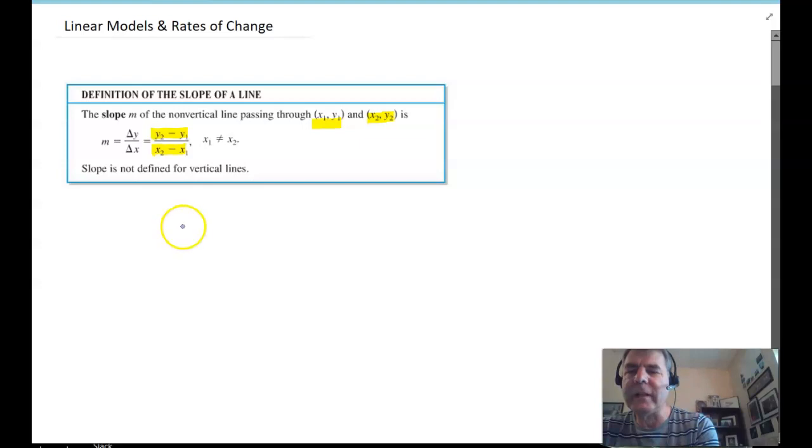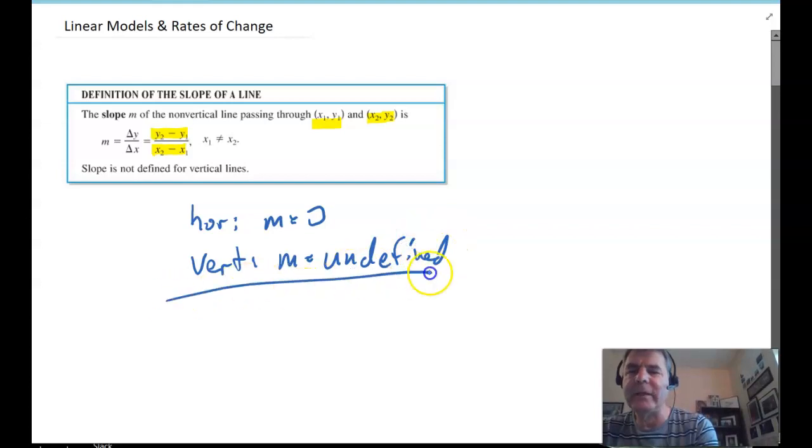Now, horizontal lines have zero slope. So, horizontal lines, the slope is zero. For vertical lines, the slope is undefined. So, that's an important distinction to make. Horizontal lines have zero slope, vertical lines have undefined slope.